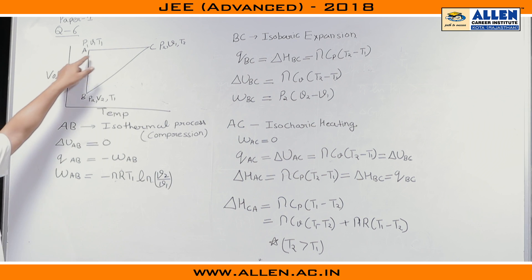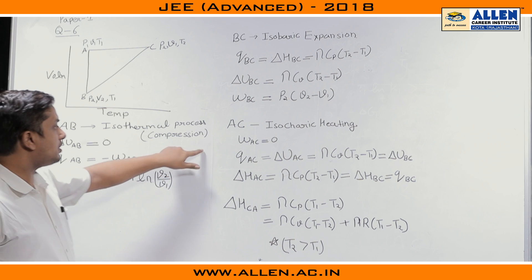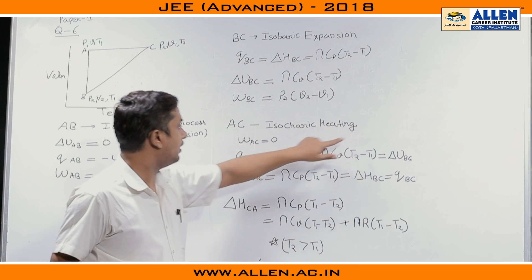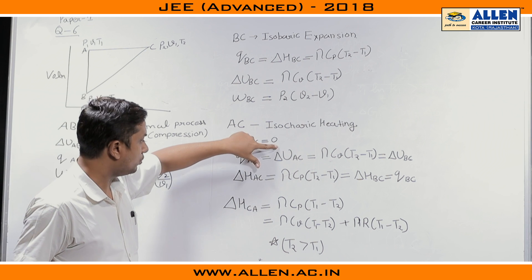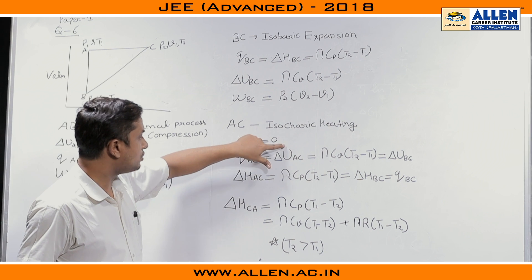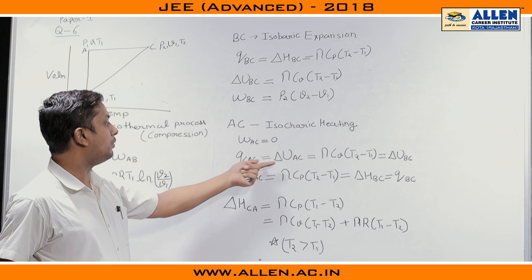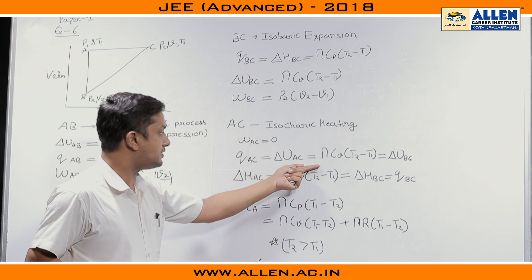Now, we have the work done Q_BC value for the process BC. Lastly, the process A to C. Now, A to C is my isochoric heating. In isochoric process, my work done will be 0. Now, once the work done is 0, my Q will be equal to delta U_AC.